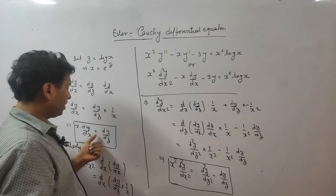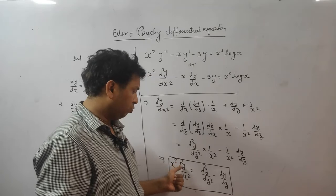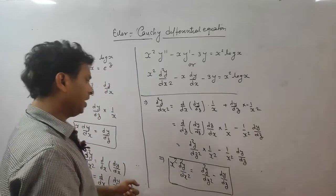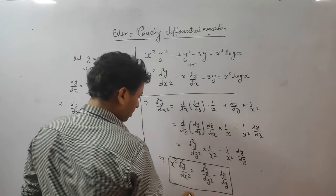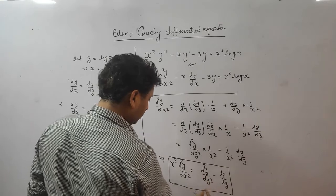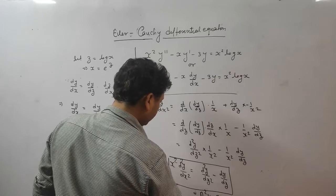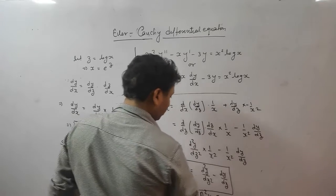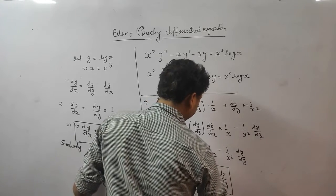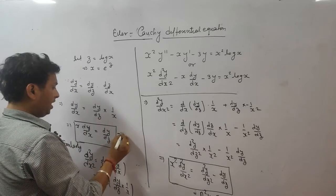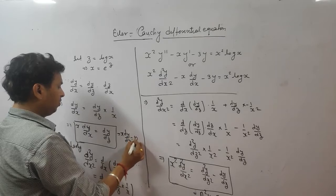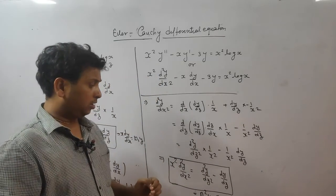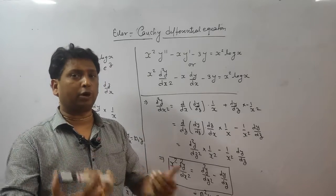In terms of the operator D₁, where D₁ = d/dz: x² d²y/dx² = D₁(D₁ - 1)y, and x dy/dx = D₁y. This is the theory behind the method.